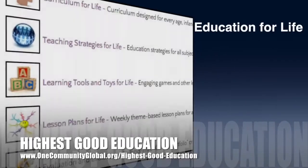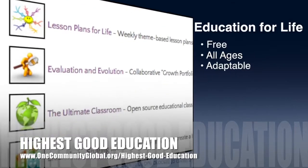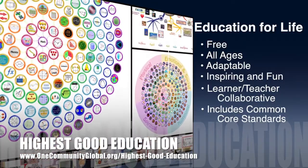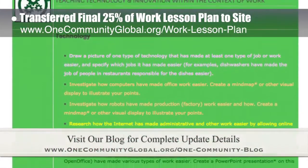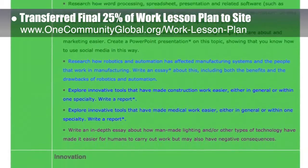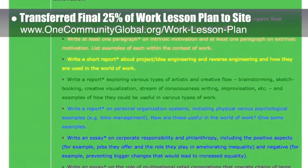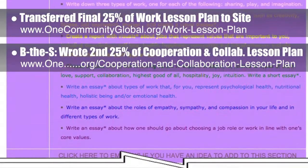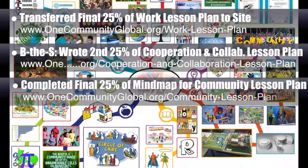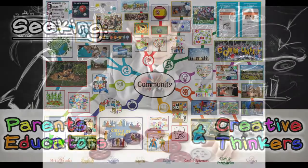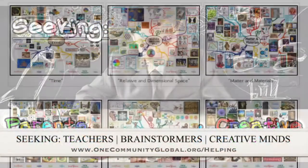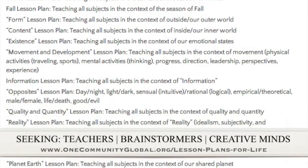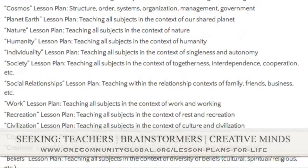OneCommunity's approach to highest good education is open source and free shared, designed for all age groups, adaptable to any schooling environment, inspiring and fun, a learner-teacher collaborative, and includes U.S. Common Core standards. This last week, the core team transferred the final 25% of the written content for the work lesson plan to the website — now 100% complete. Behind the scenes, we wrote the second 25% of the cooperation and collaboration lesson plan, and completed the final 25% of the mind map for the community lesson plan. We are seeking people to finish these lesson plans and contribute to our open source education program for all ages.